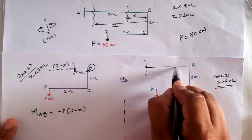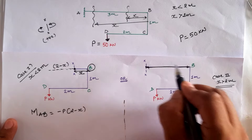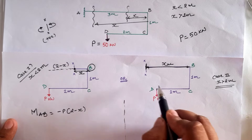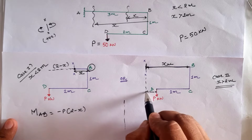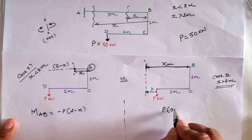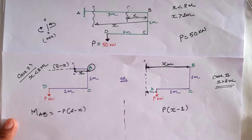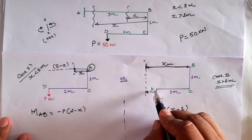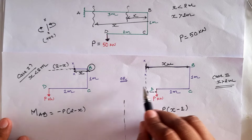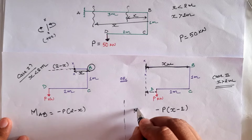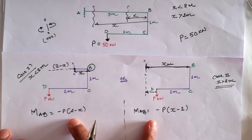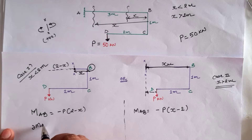For the second case where x is greater than 2, the distance from B is x meters. Taking the moment here, the perpendicular distance is (x minus 2), so the moment is P into (x minus 2). According to the sign convention the value is negative as the moment is clockwise on the right-hand side, so the moment at AB segment is minus P into (x minus 2).